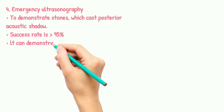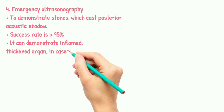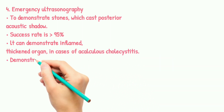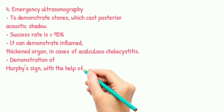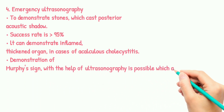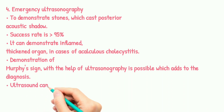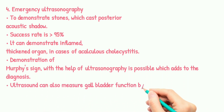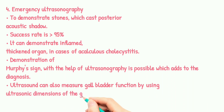Emergency ultrasonography can demonstrate stones which cast a posterior acoustic shadow, with a success rate of more than 95%. It can also demonstrate the inflamed thickened organ in cases of acalculous cholecystitis. Ultrasound can also measure gallbladder function using ultrasonic dimensions, and it can detect gallbladder polyps.